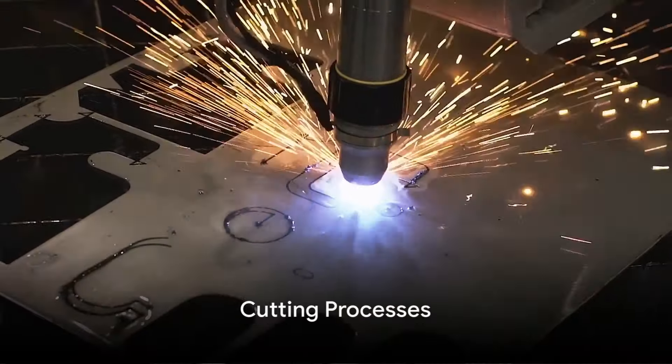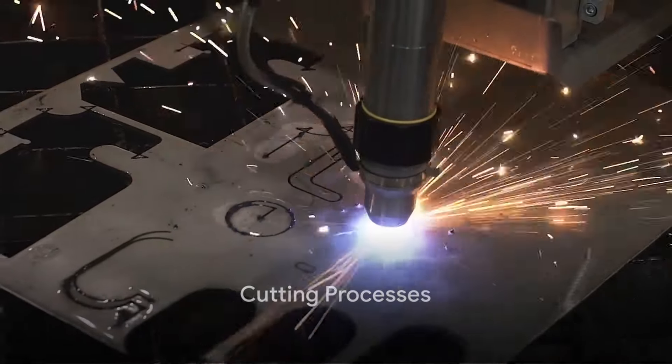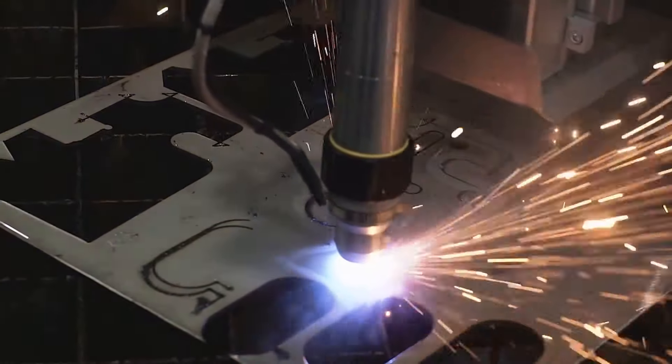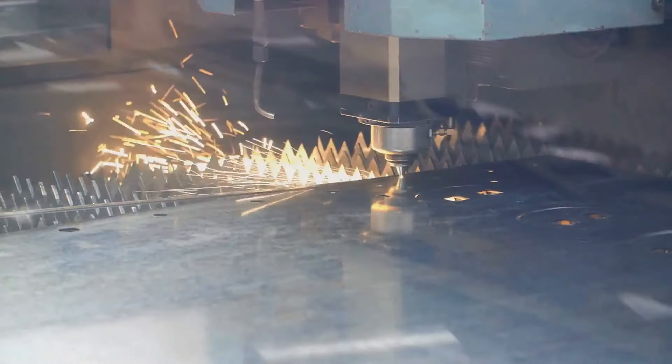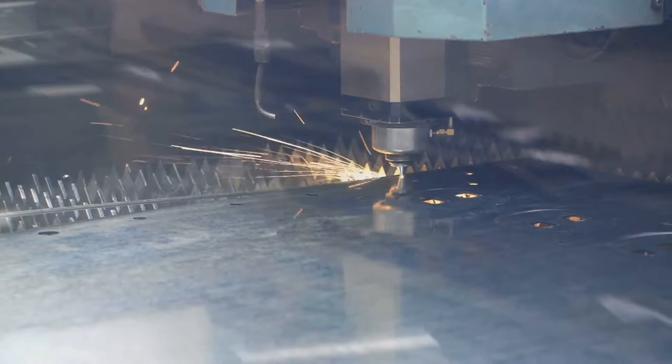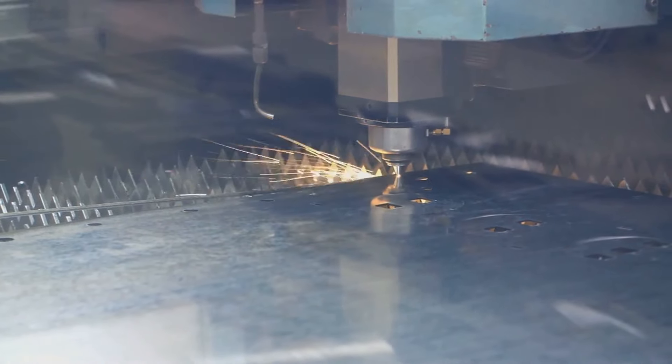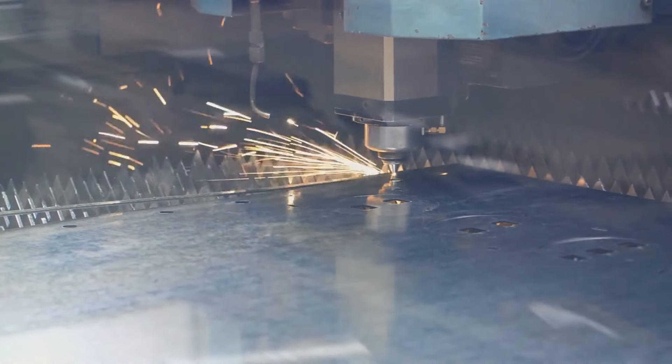Our journey begins with the cutting processes. Here, laser cutting slices through metal with the precision of a surgeon's scalpel. Next in line is plasma cutting, a process that uses a high-velocity jet of ionized gas to cut through the metal.